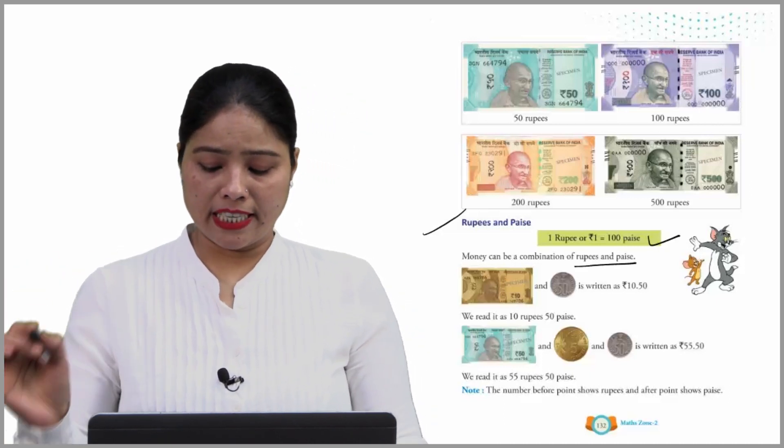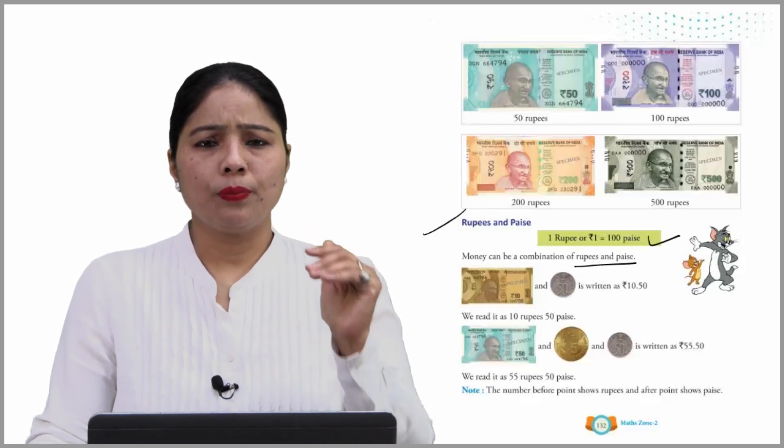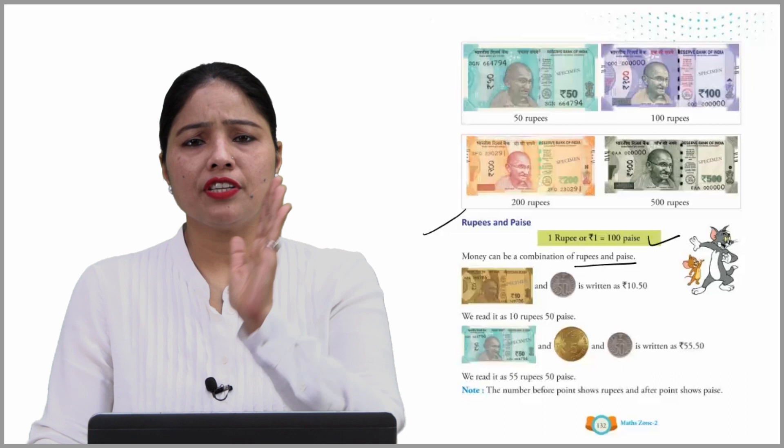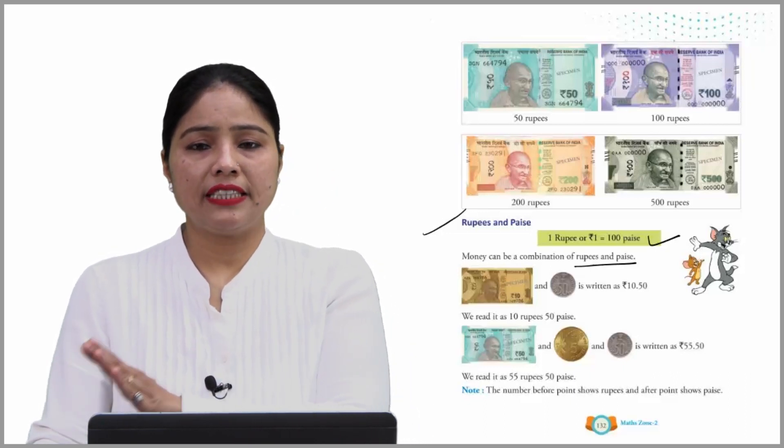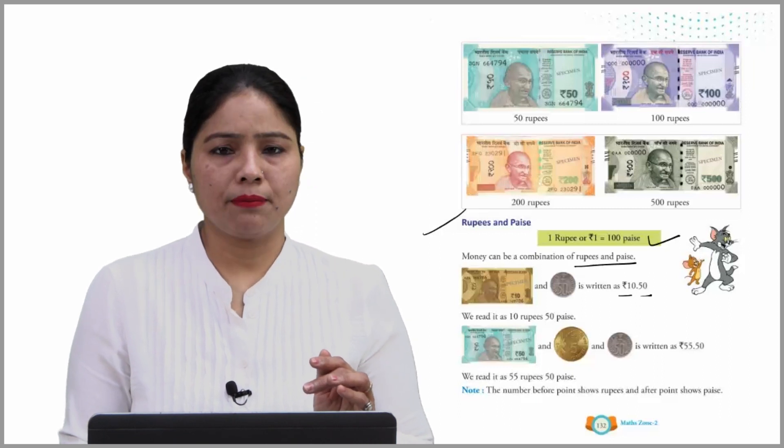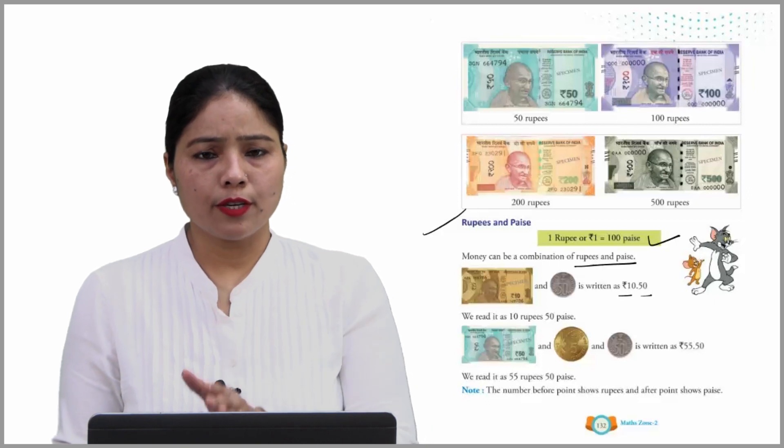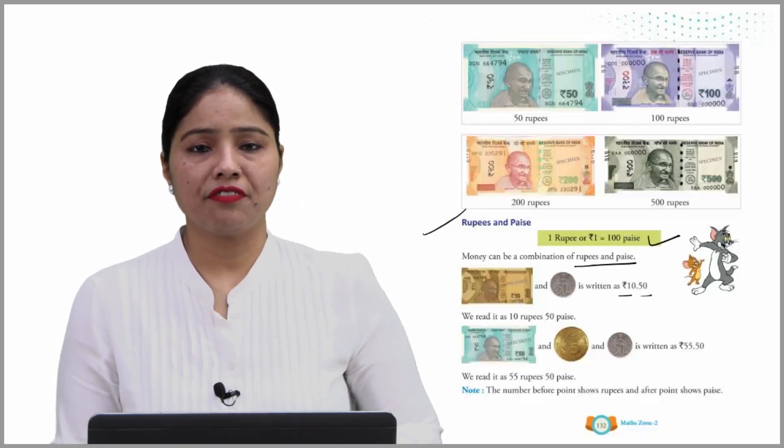Money can be a combination of rupees and paise. Like this is ten rupees and fifty paise, written as 10.50. We read it as ten rupees fifty paise.